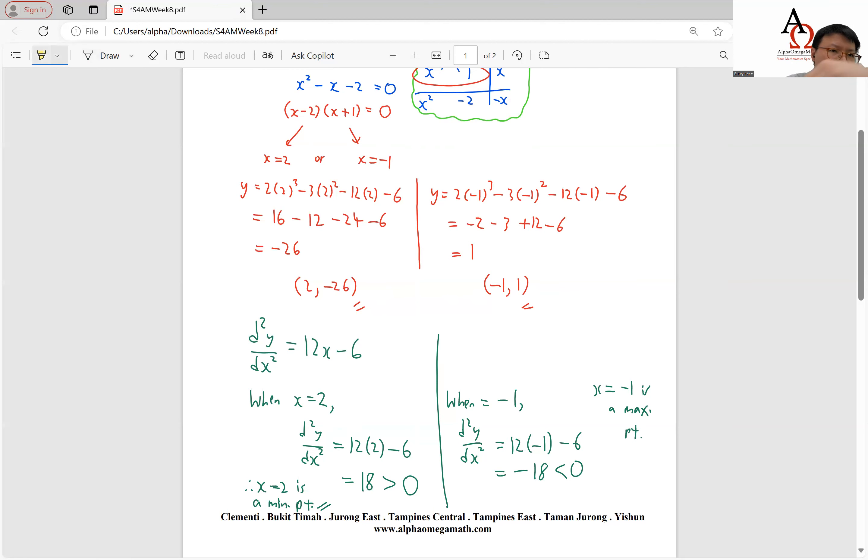So take note that when our second derivative is larger than 0 or positive, our point will be a minimum point. On the other hand, if our second derivative gives us a negative value, our point will be a maximum point.